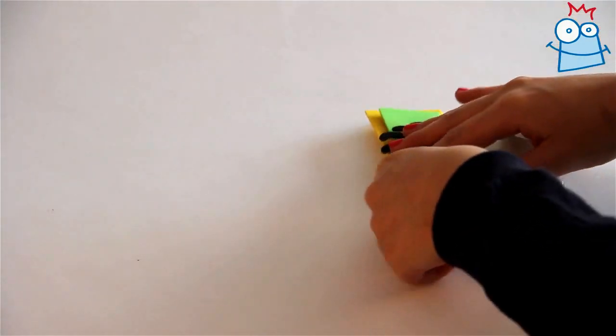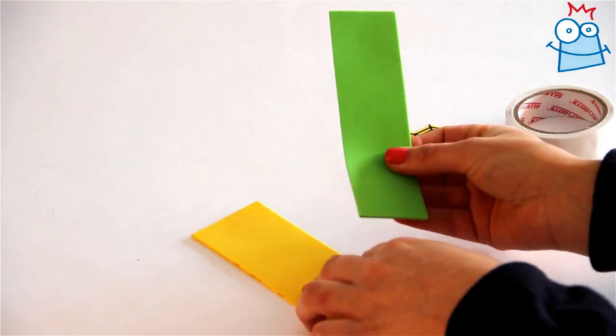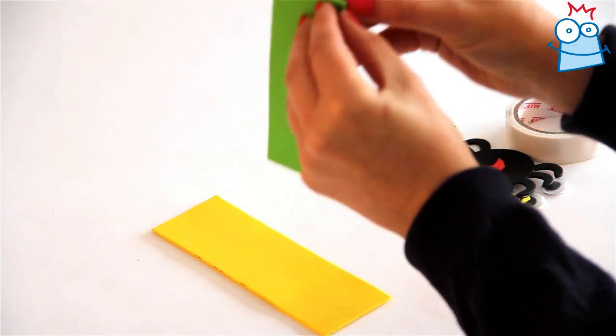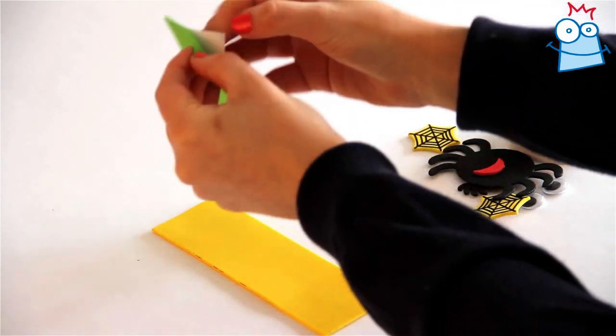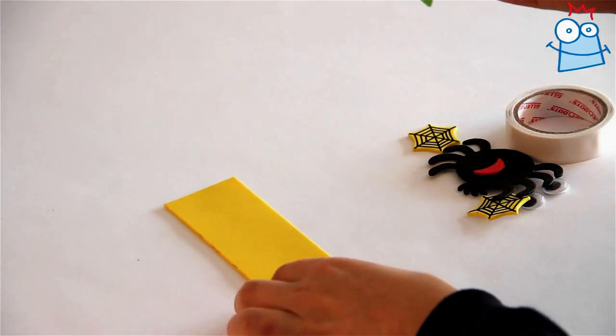Start with the two big rectangle pieces. Lay the larger one on the desk and peel off the backing from the smaller one. Then carefully stick it onto the larger one like so.